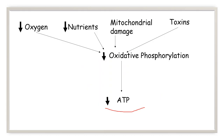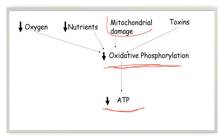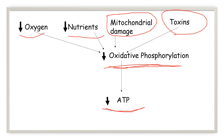What causes reduction in ATP? Most ATP comes from oxidative phosphorylation, which happens in the mitochondria and is required for most synthetic pathways and metabolic processes. If there is mitochondrial damage, there will be decreased oxidative phosphorylation and decreased ATP. Similarly, decreased oxygen, nutritional imbalance, or exposure to toxins can all result in decreased oxidative phosphorylation and decreased ATP.